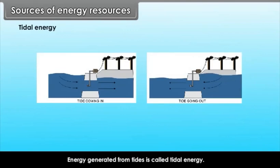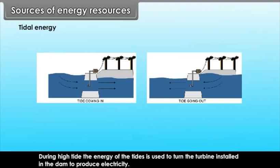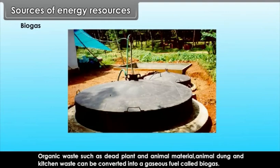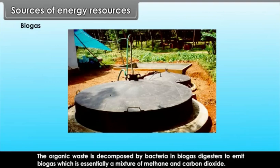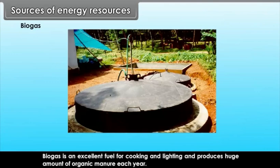Energy generated from tides is called tidal energy. It can be harnessed by building dams at narrow openings of the sea. During high tide, the energy of the tides turns turbines installed in the dam to produce electricity. Biogas is produced from organic waste such as dead plant and animal material, animal dung and kitchen waste. The organic waste is decomposed by bacteria in biogas digesters to emit biogas, which is essentially a mixture of methane and carbon dioxide. Biogas is an excellent fuel for cooking and lighting and produces large amounts of organic manure each year.